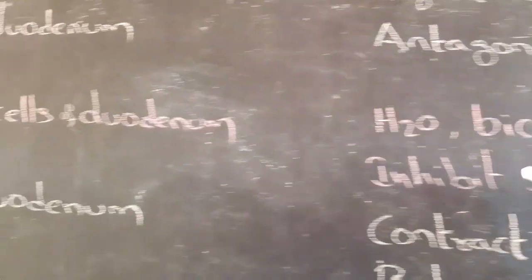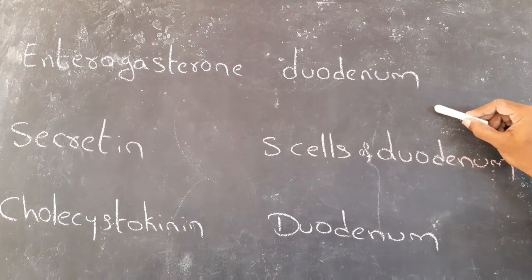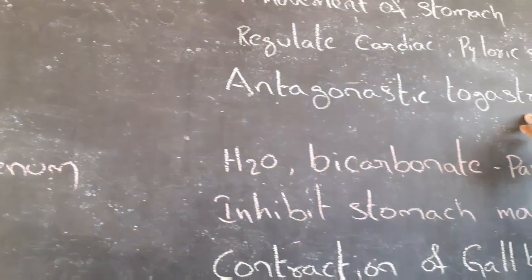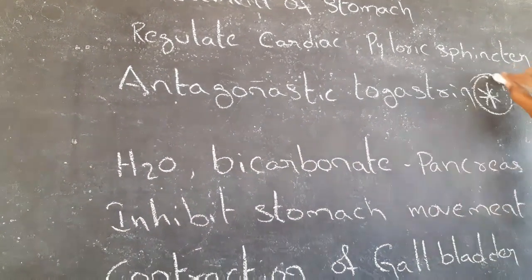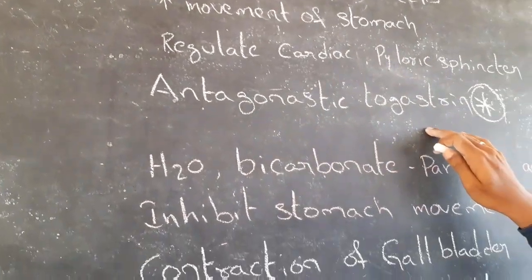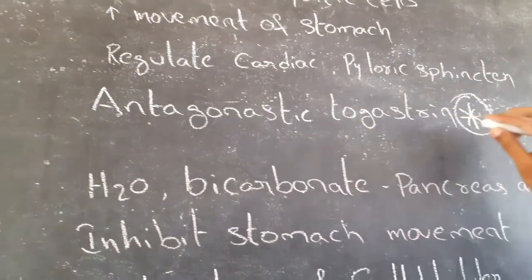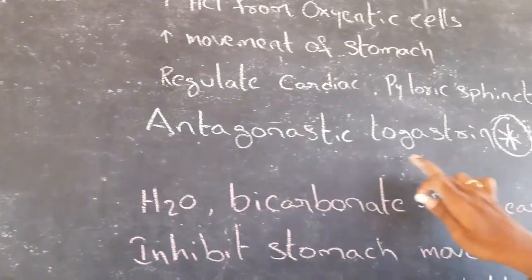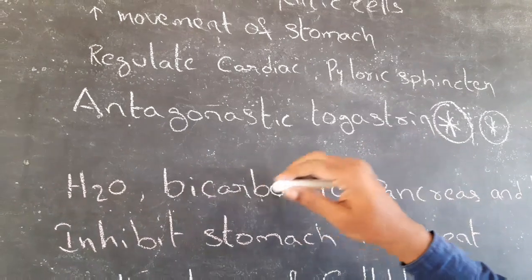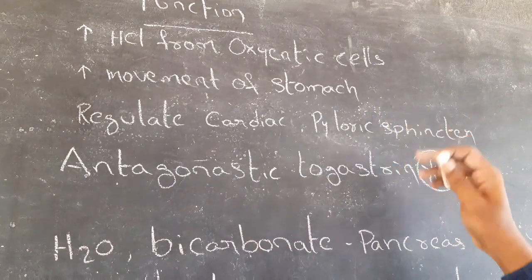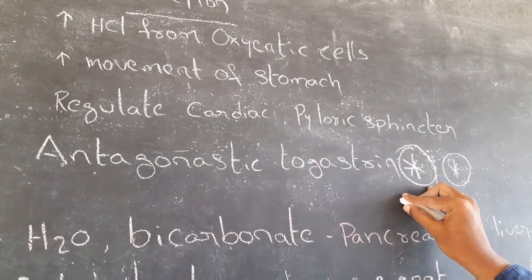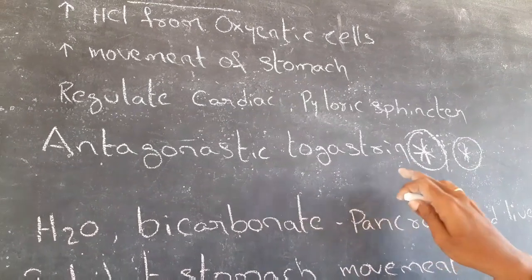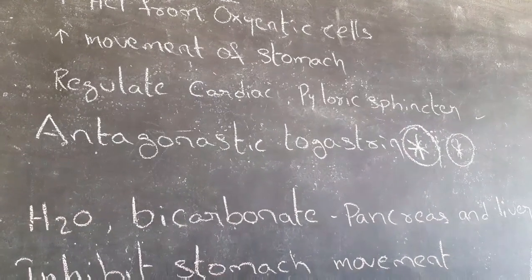Enterogastrin is released from the duodenum. It is antagonistic to gastrin. Enterogastrin decreases the release of HCl from oxyntic cells and inhibits the movement of the stomach. It also regulates the cardiac and pyloric sphincters.